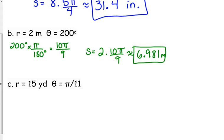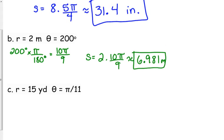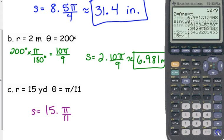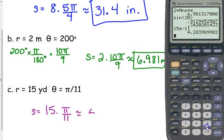Alright, one more here. It's already in radians, so we're good to go. We can just do 15 times pi over 11. And so that's approximately 4.284 yards.